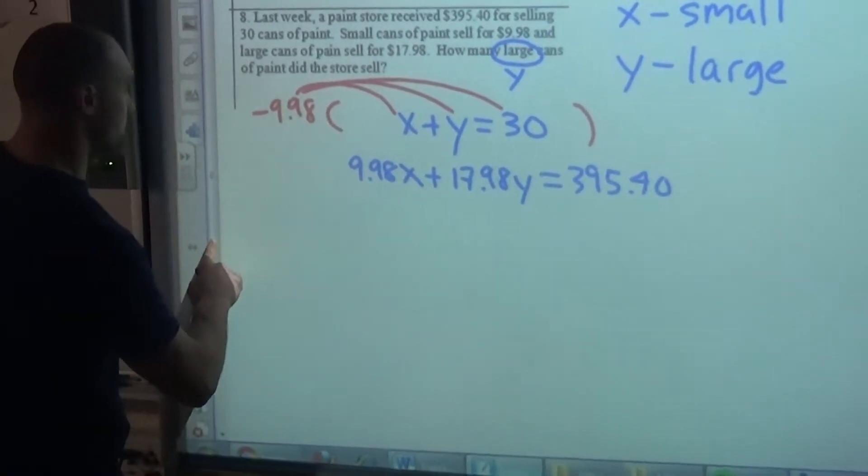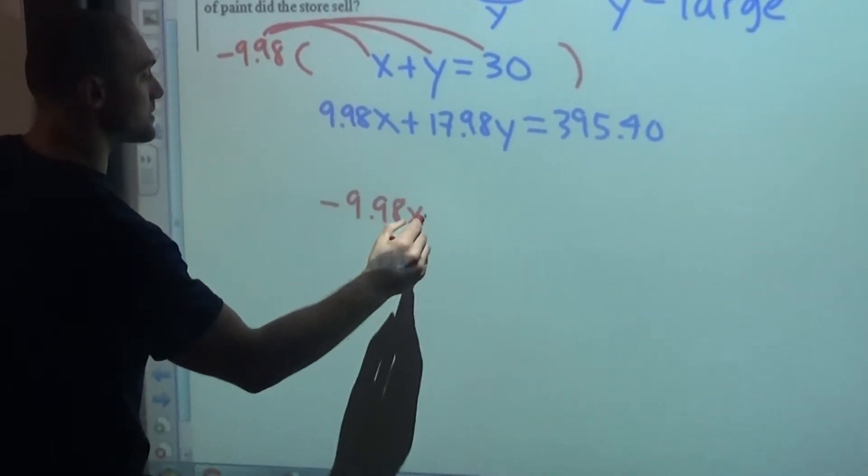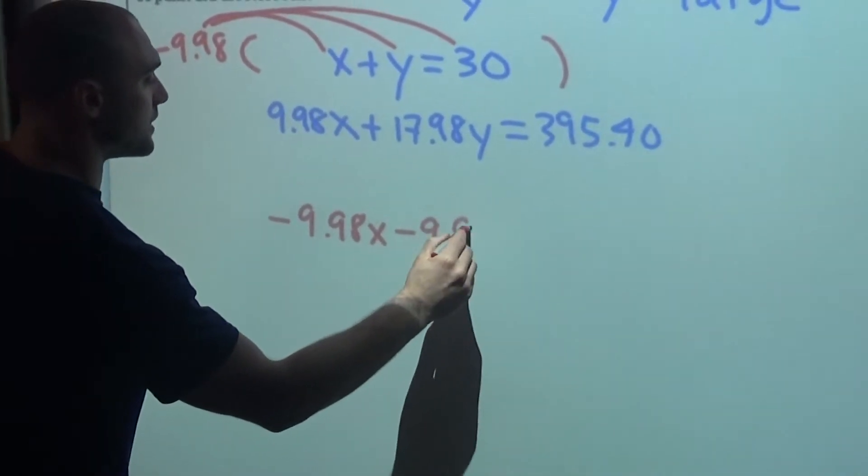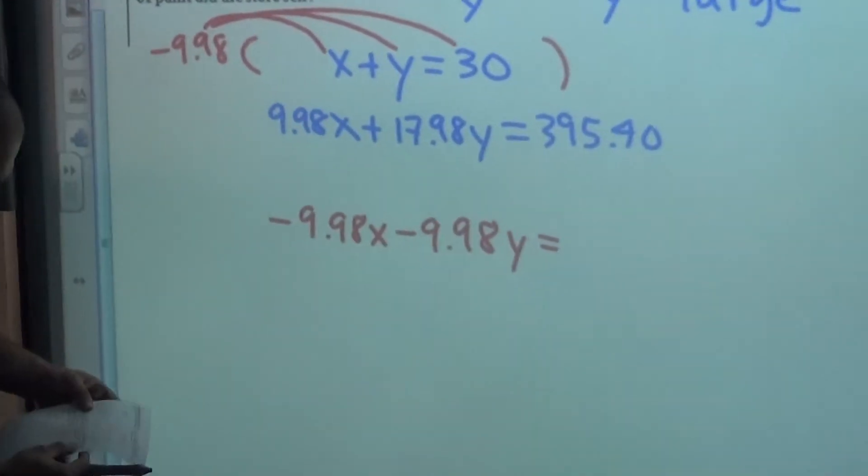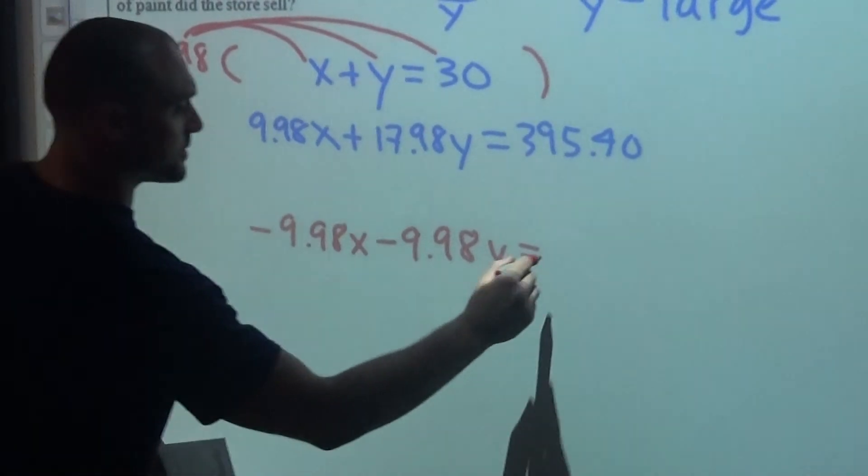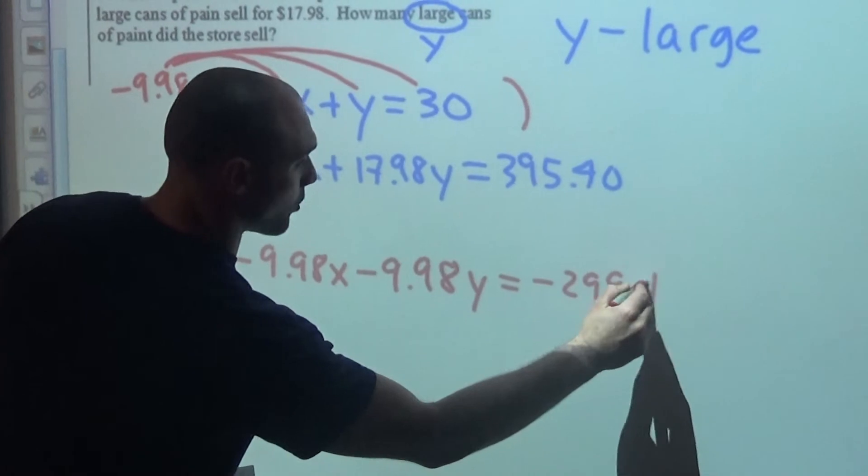So that would result in negative $9.98x minus $9.98y. And I need to multiply by 30. I've done that calculation, negative $299.40.